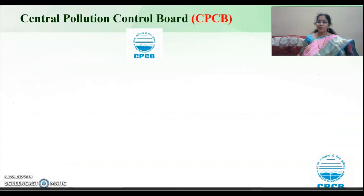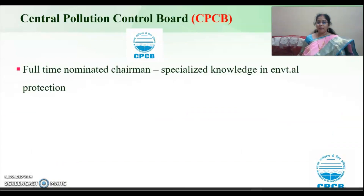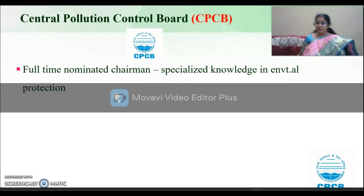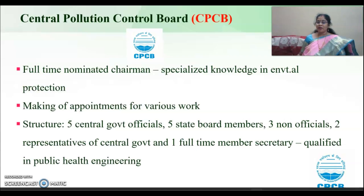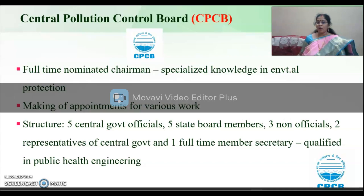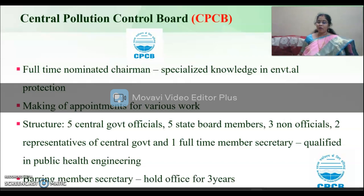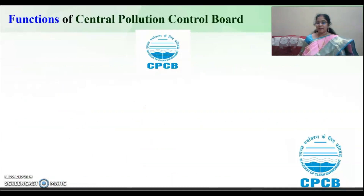The Central Pollution Control Board has a full-time nominated chairman with specialized knowledge in environmental protection. His main duty is making appointments for various work. The structure of the board has five central government officials, five state board members, three non-officials, two representatives from the central government, and one full-time member secretary who is qualified in public health engineering. The member secretary can hold office for three years.